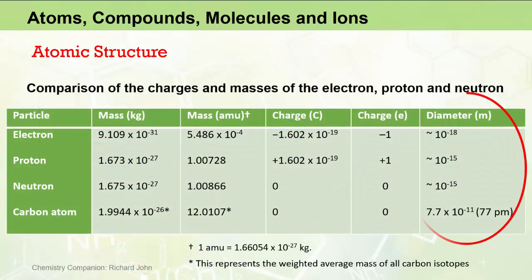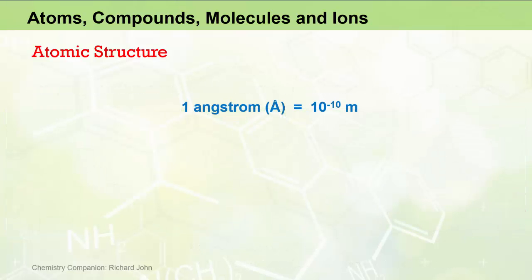Now the diameter of an atom can be roughly defined as the diameter of the electron cloud, and atoms typically have diameters ranging from about 50 picometers up to 500 picometers, with a carbon atom having a diameter of about 77 picometers.